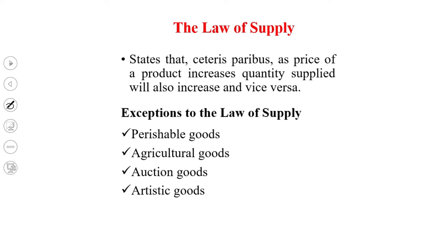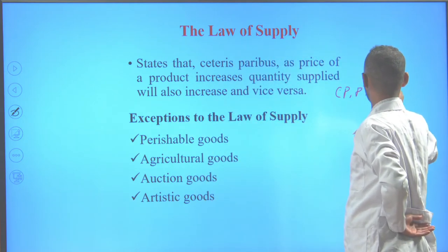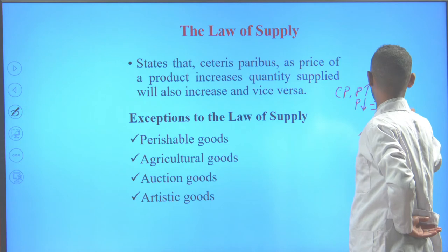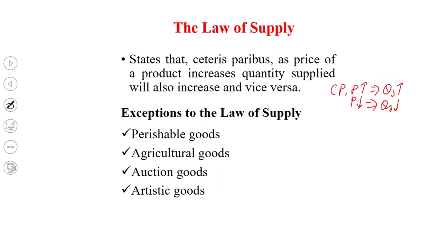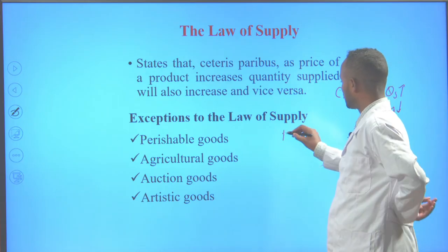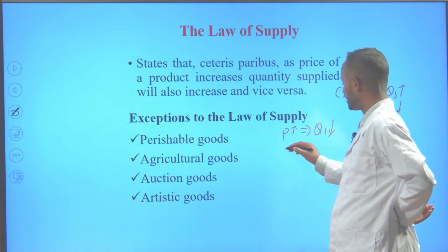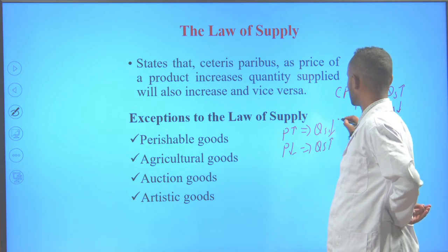Let's see the exceptions to the law of supply. These are violations of the law of supply. The law of supply states that ceteris paribus, as price increases, quantity supplied will also increase, and as price declines, quantity supplied will also decline. But for certain commodities, the law of supply is violated. That means as price of a commodity increases, quantity supplied will decline or remains unchanged, and as price declines, quantity supplied will increase or remains unchanged.